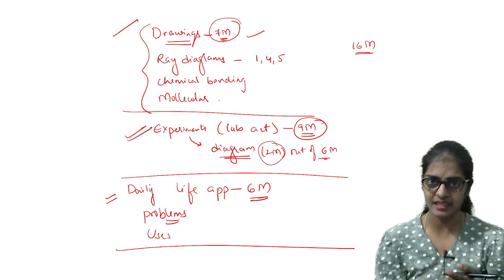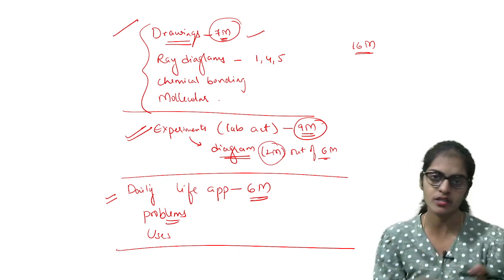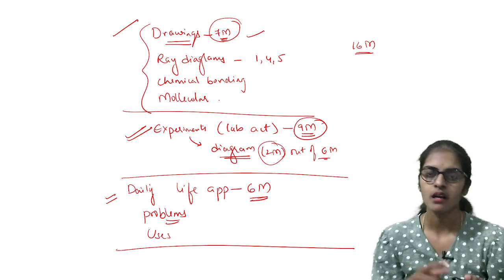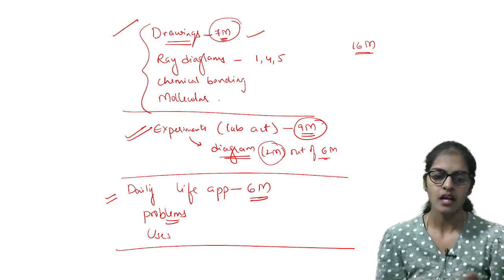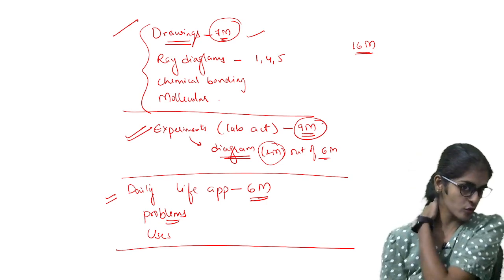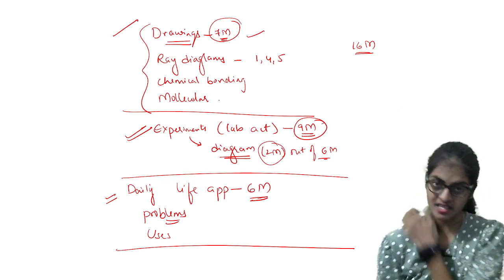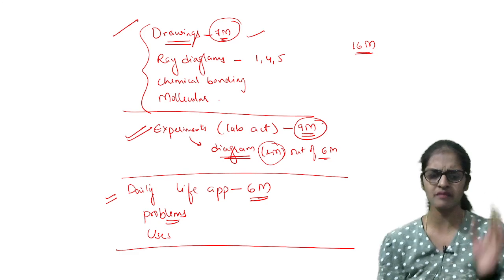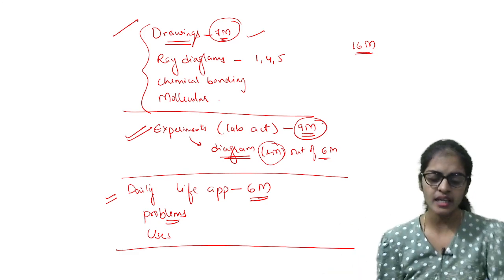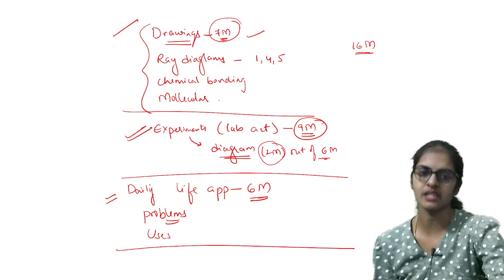Acids and bases has lot of daily life application. Uses - uses of bleaching powder, baking soda, washing soda and all this. After that, you have uses in metallurgy chapter also. So those uses. So very few uses you have, learn them. And small problems also you learn.